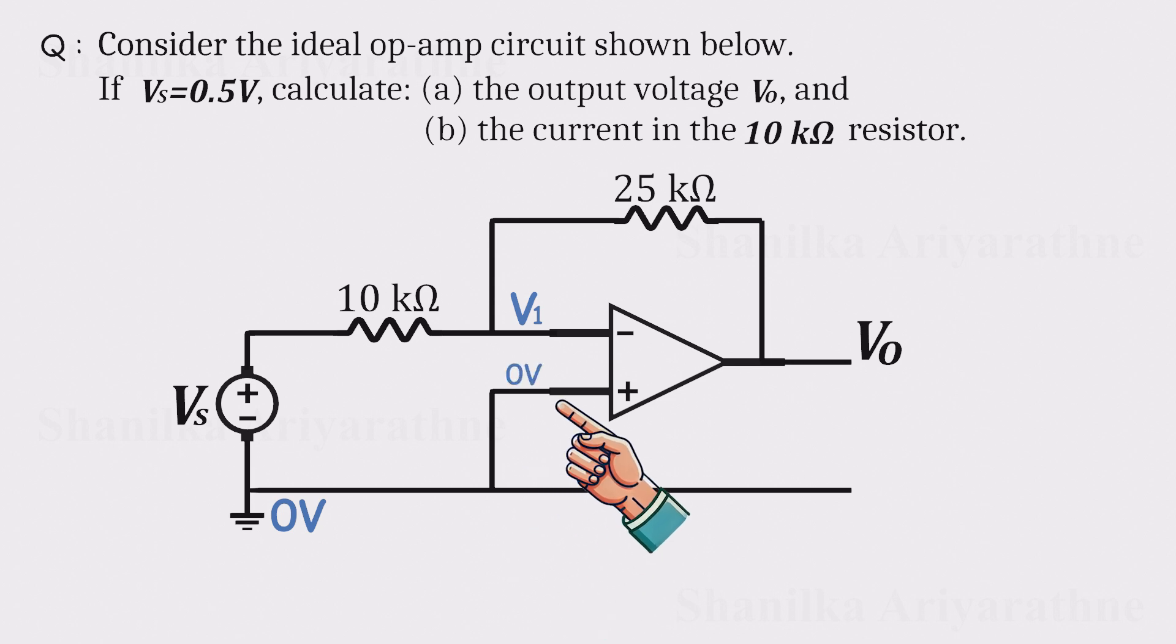Now for the branch currents. The current through the input resistor is I1. The tiny currents flowing into the op-amp inputs can be called I2 and I3. And the current through the 25 kiloohm feedback resistor we'll call I4.